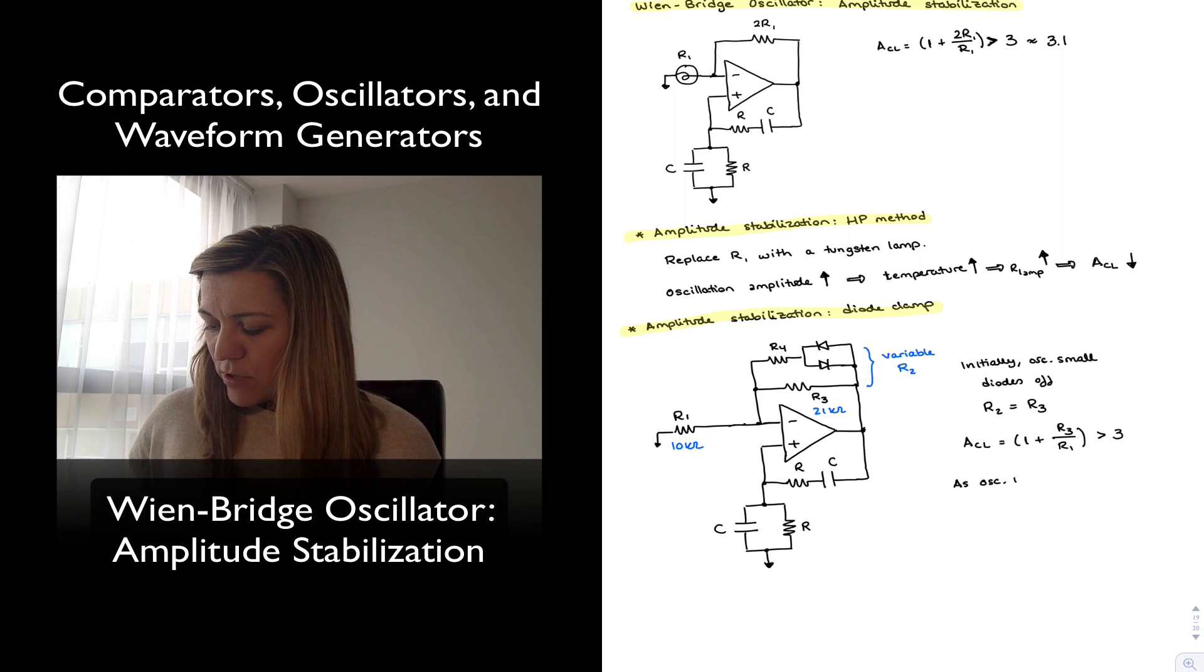And so as the oscillations increase, my diodes are going to kick in, are going to turn on my clamping diodes, so that one of them is going to be on during the positive half of the oscillation, the other one is going to be on during the negative half of the oscillation, but there's always going to be one diode that is conducting, so one path for the current to go, which means that, essentially, it's going to appear as if the feedback resistor is R4 in parallel with R3.